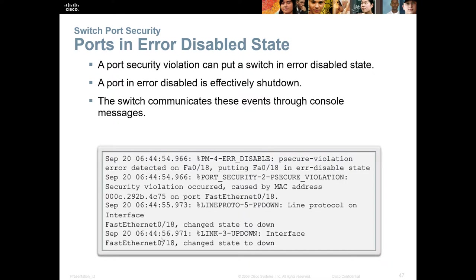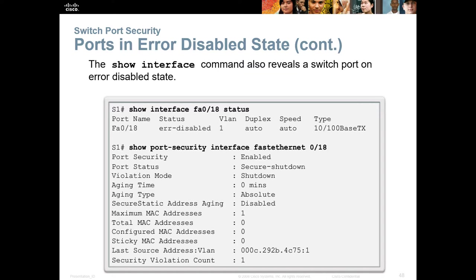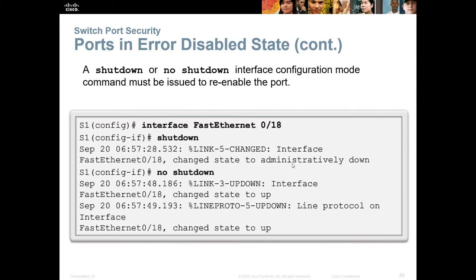To determine if a port is in an error-disabled state: a port security violation can put the switch port into an error-disabled state. The system will log a message indicating a port security violation occurred due to a specific MAC address on a specific interface. You can use 'show port-security interface fastethernet 0/18' to see the details. To bring the port back up, administratively shut it down with 'shutdown,' then re-enable it with 'no shutdown.'